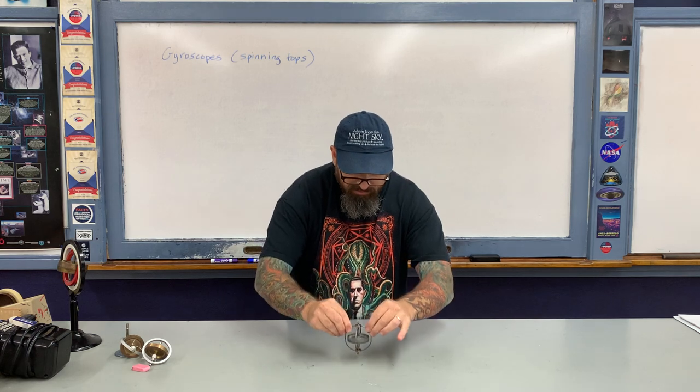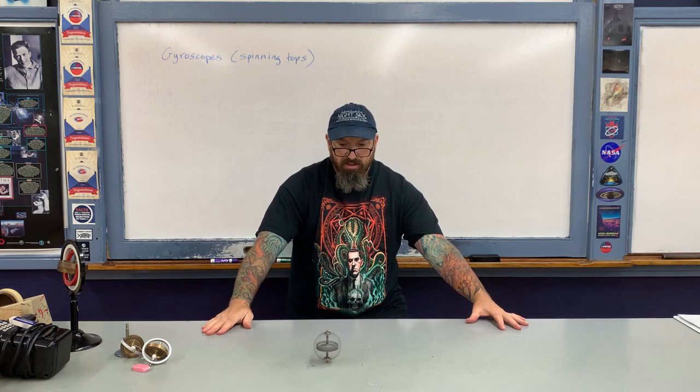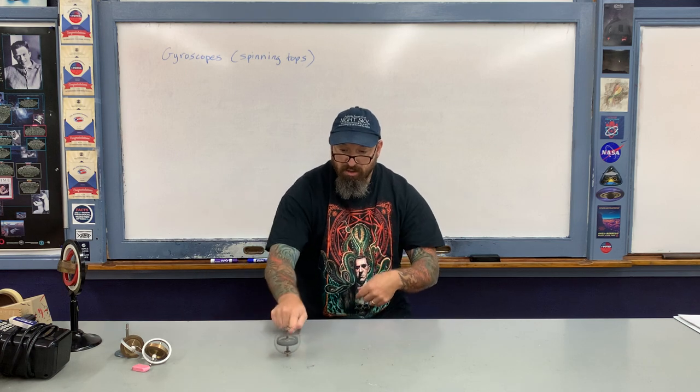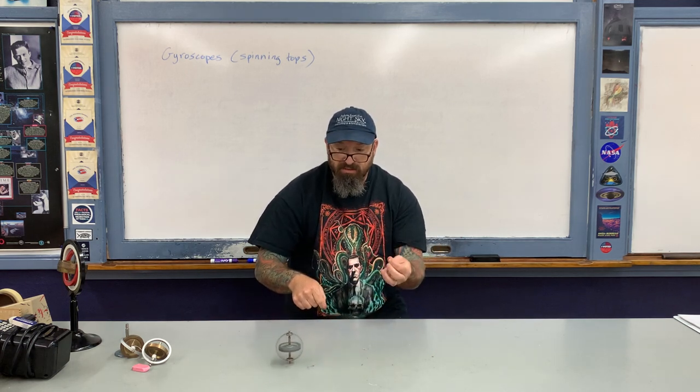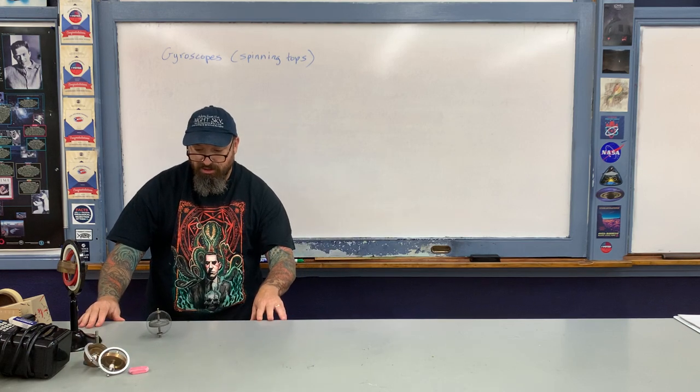I'll position it on the desk like so. That's reasonably well balanced — basically the angle between the gravitational force vector and the moment arm from pivot to center of mass is about 180 degrees. You can see it's beginning to wobble a little bit. The reason is that there's a little bit of friction between the pivot point and the top itself, causing it to undergo this type of rotation — referred to as a precession.